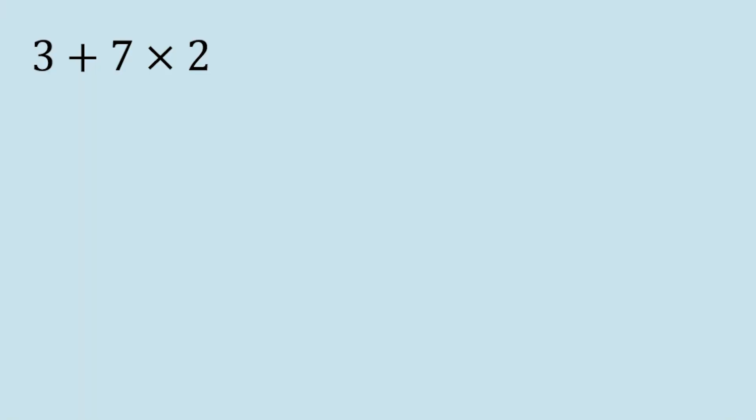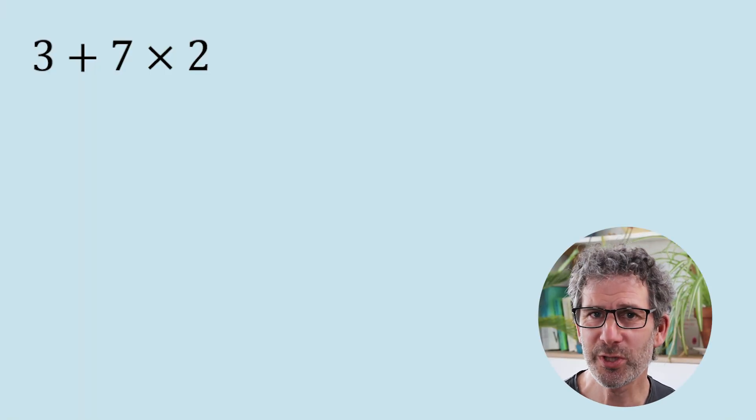This video is all to do with order of operations, what people often refer to as BIDMAS. That tells us the correct order in which to carry out calculations when we're doing maths — and not just when we're doing these BIDMAS exercises. It's whenever you're doing any calculations in maths, you always follow this order, because we don't always just go from left to right. Let me dive straight in with an example to show you what I'm talking about.